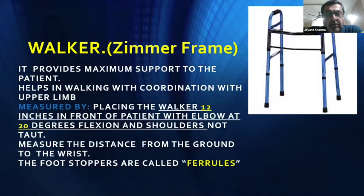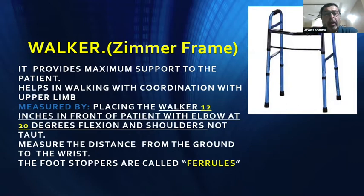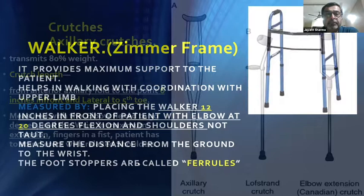A walker, also known as a Zimmer frame, is usually kept in the ward during ward rounds. It provides maximum support and helps in walking with coordination. It is measured by placing the walker 12 inches in front with the elbow at 20 degrees flexion and shoulders relaxed. Measure the distance from the ground to the wrist — this is the ideal height. The foot stoppers used are known as ferrules.